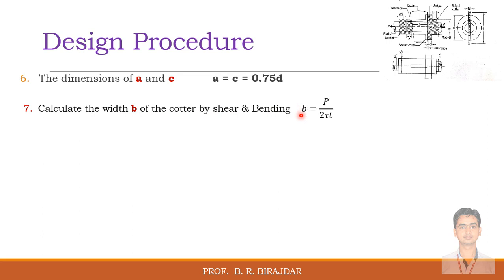B is equal to p divided by 2 tau t, this is based upon the shear strength. And B is equal to under root 3p divided by sigma bt bracket d2 by 4 plus d4 minus d2 divided by 6.